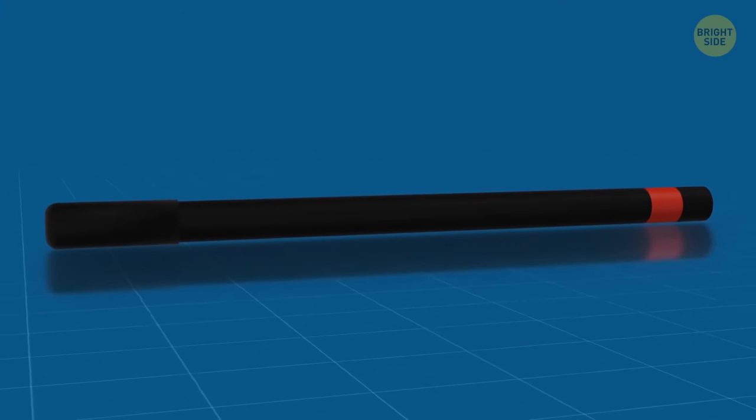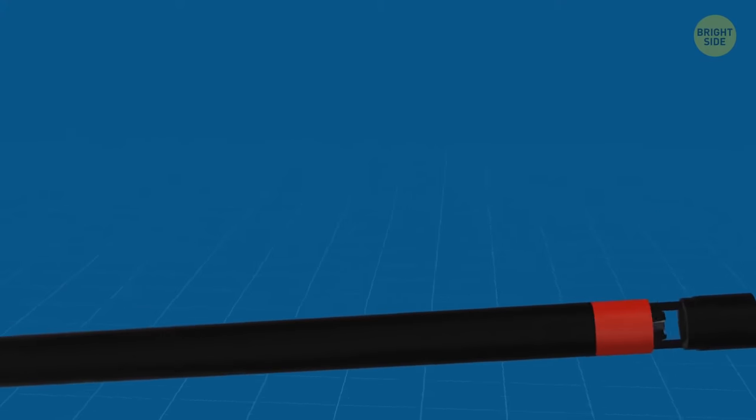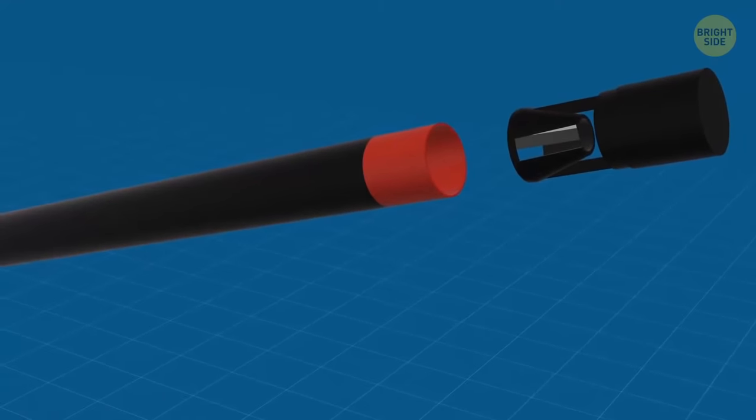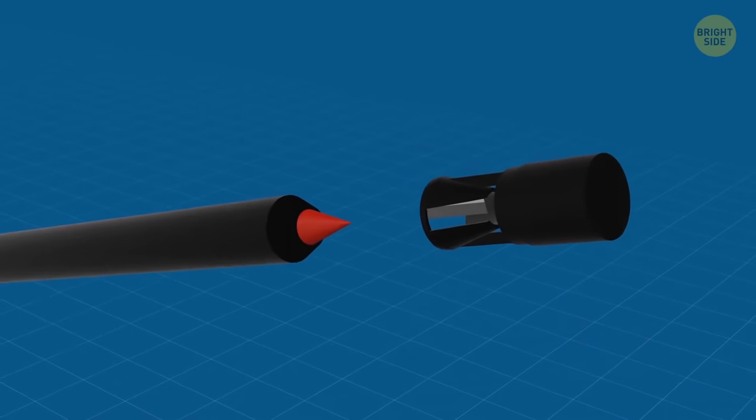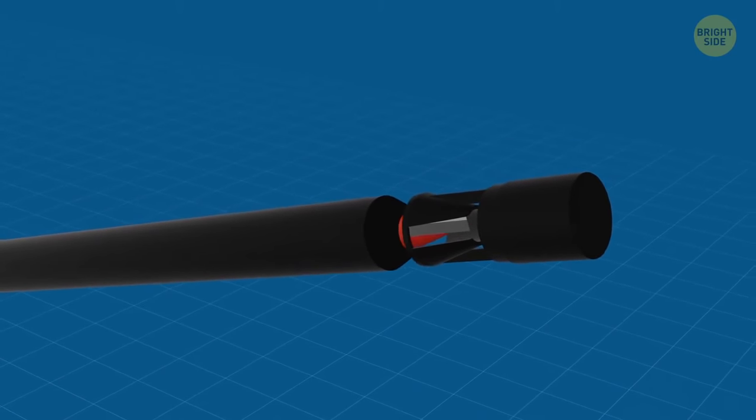Automatic lip liners and eye pencils have a sharpener installed in the package. The lid on the back part of the pencil doesn't only reveal the color. You can pull it out and sharpen up the product.